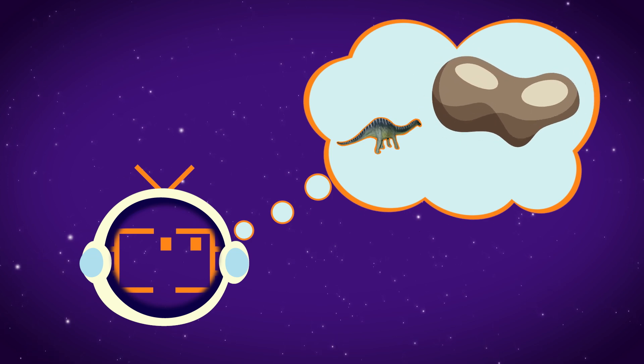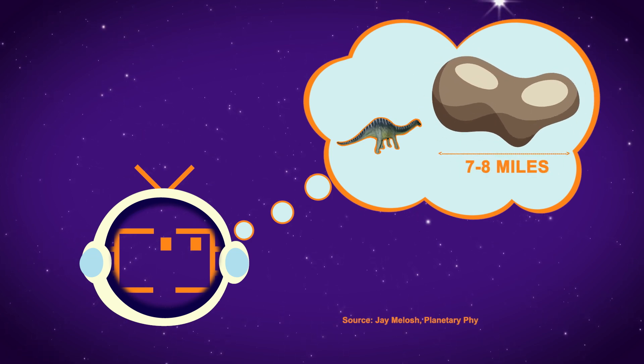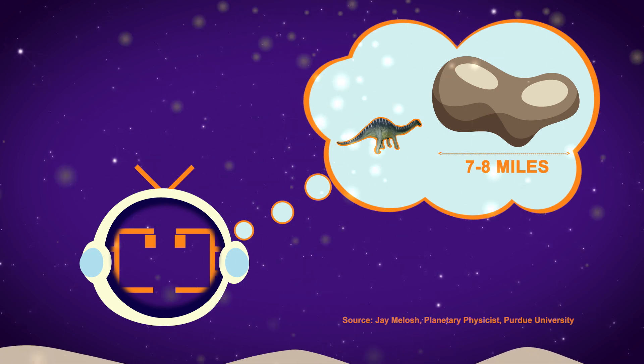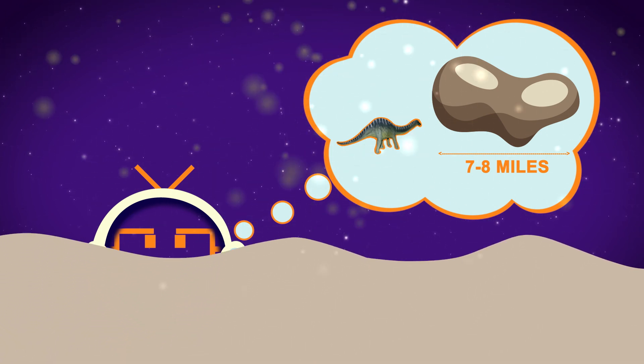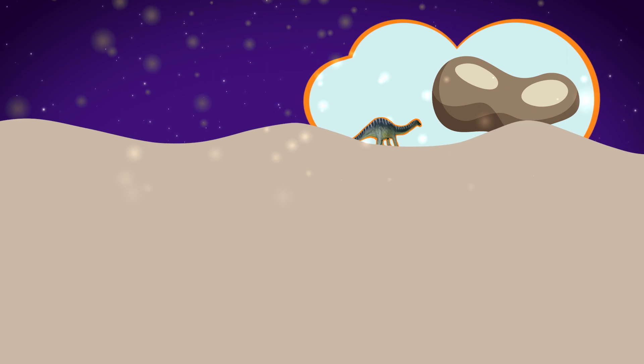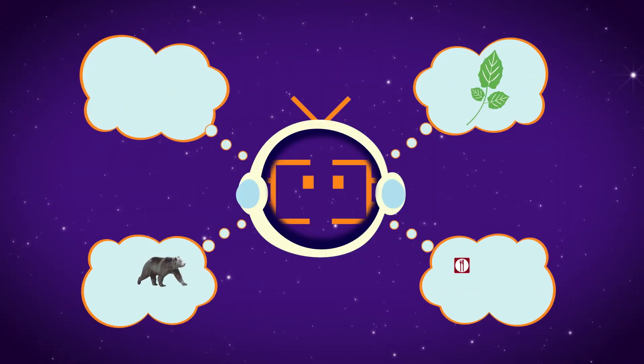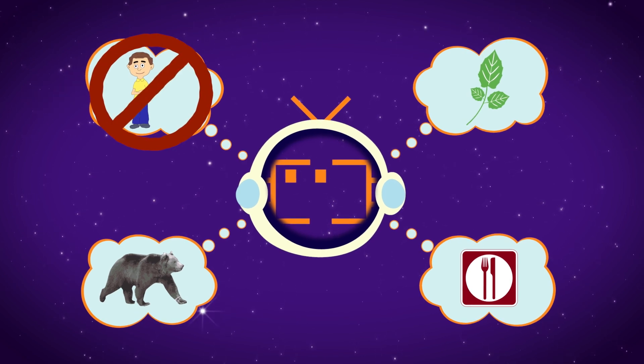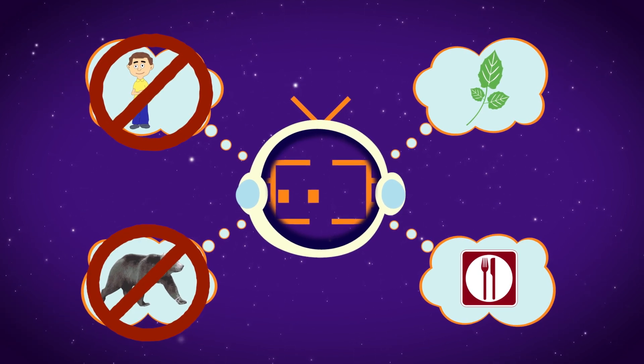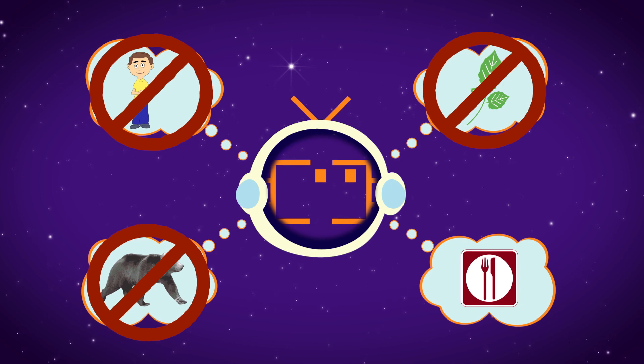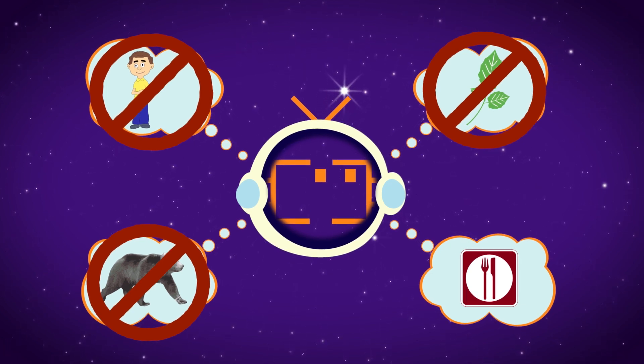Scientists think the object that killed the dinosaurs was about 7 to 8 miles wide, sending a dust plume so big it engulfed the planet, igniting fires, and basically broiling the dinosaurs. A similar collision today would likely kill billions of people, most of the animals, and all the vegetation. It's possible a few people could survive, but they would have a hard time finding food.